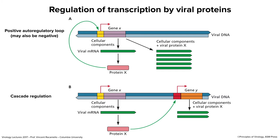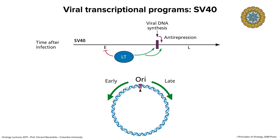The reason for cascade regulation is that you want to make proteins when you need them. A big limitation for DNA viruses is that DNA replication typically occurs later in infection because the virus must first make proteins to initiate DNA replication. There's no point making capsid proteins in the first hour if you can't use them for another six hours — they'd probably get degraded anyway.